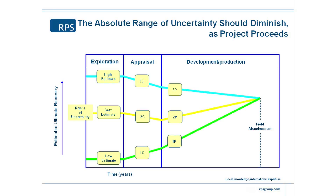If you get a discovery, then you will go into appraisal phase. Once you've got a discovery, you know there's something down there — you've recovered hydrocarbons from the first well, maybe not huge rates, but you know that there's hydrocarbons. So most of the technical risk has disappeared. Now you have to appraise it. You go through the C category — what we call contingent resources. But there's still a huge range of uncertainty because you've only maybe penetrated it once or twice, and as you develop it, you progress it a little bit further.